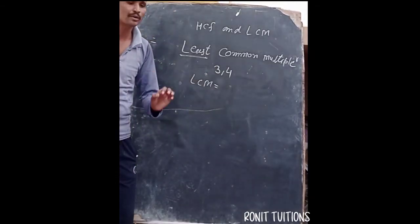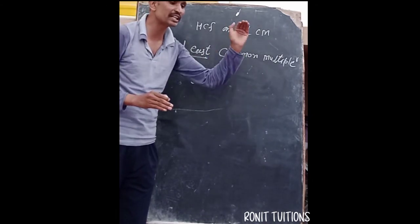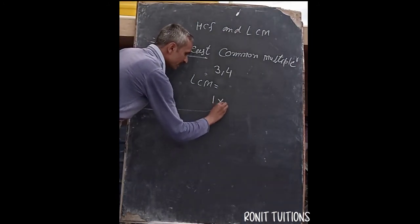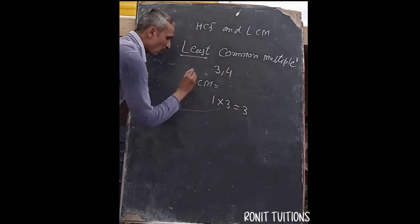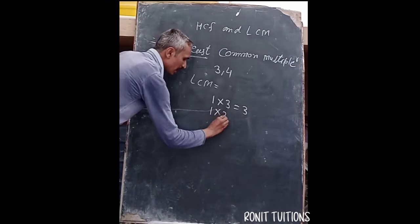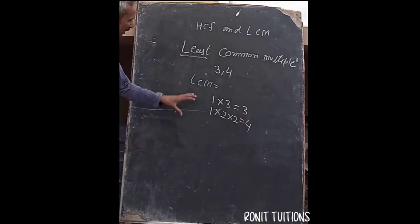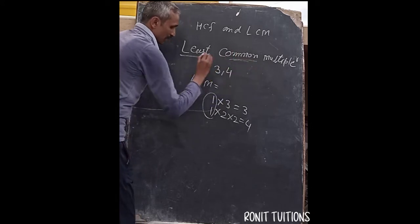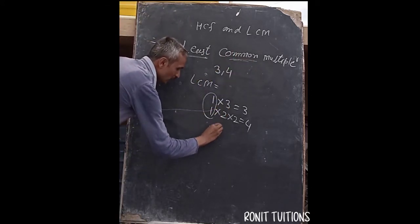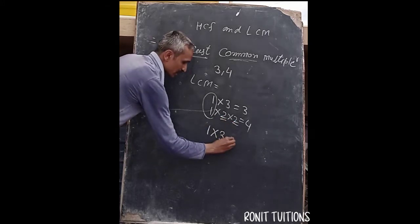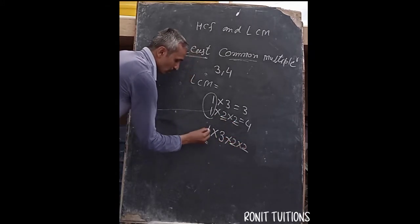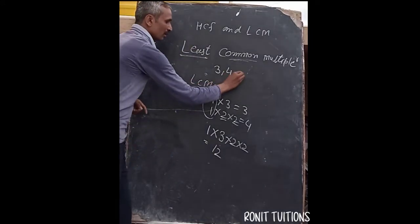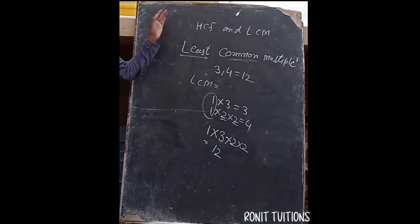We break down the numbers into their prime factors. For 3: it comes in the 1 and 3 table only, so factors are 1 and 3. For 4: it comes in the 2 table as well — 2 into 2 equals 4. For the LCM, we write all prime factors together: 3 and 2 into 2, giving us 3 × 4 = 12. So the LCM of 3 and 4 is 12.